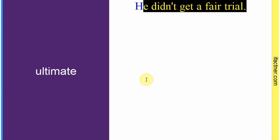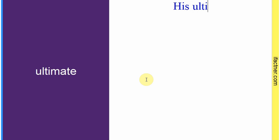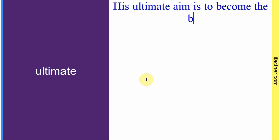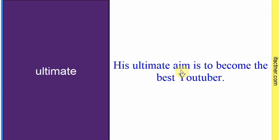Word hai: 'ultimate'. Sentence banaate hain: 'His ultimate aim is to become the best YouTuber.' Uska jo aakhri aim hai — sab se aakhri wala jo uska aim hai — woh best YouTuber banna hai. Toh 'ultimate' hota hai 'aakhri', sab se aakhri wala. Sentence banaaya: 'His ultimate aim is to become the best YouTuber.'